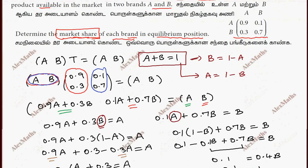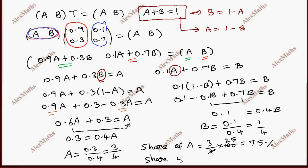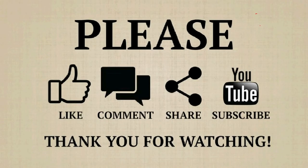Determining the market share: the market share of A is 3/4, so 3/4 into 100 equals 75%. The market share of B is 1/4, so 1/4 into 100 equals 25%. Therefore, market share of A is 75% and market share of B is 25%.